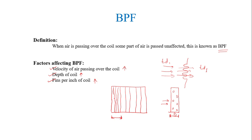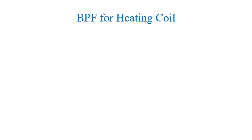Basically, the bypass factor is nothing but the inefficiency of the coil. So the efficiency of coil with respect to the bypass factor is one minus bypass factor, where bypass factor is the inefficiency. So one minus inefficiency is nothing but the efficiency of the coil.